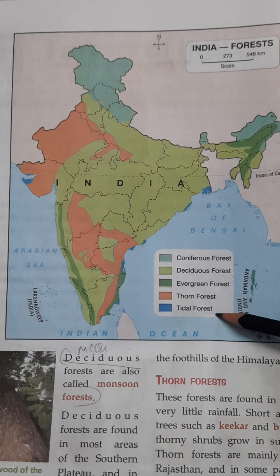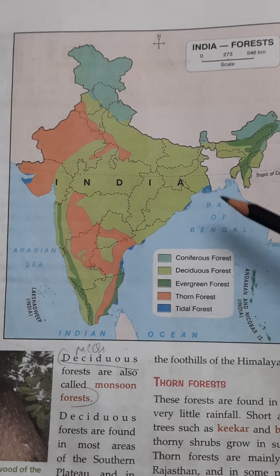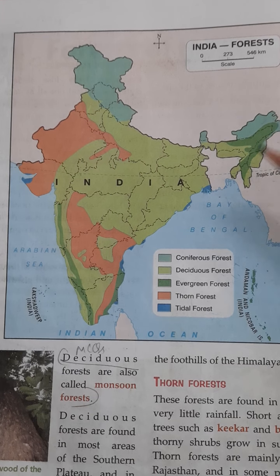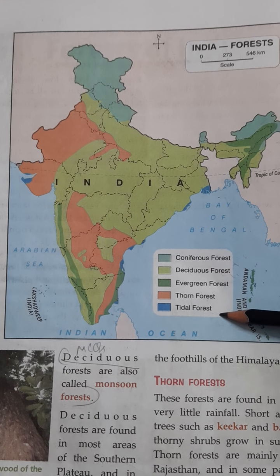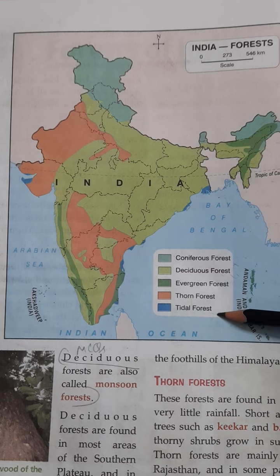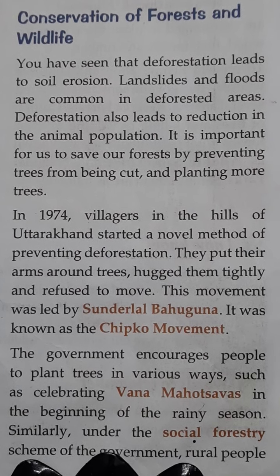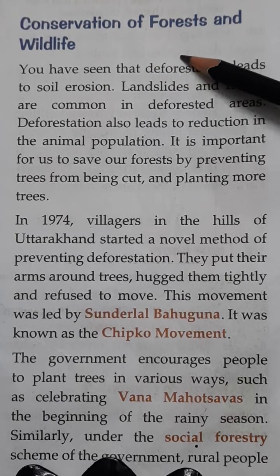Thorn forests are mainly found in Rajasthan, as you can see on the map, and also in some parts of the Deccan Plateau.